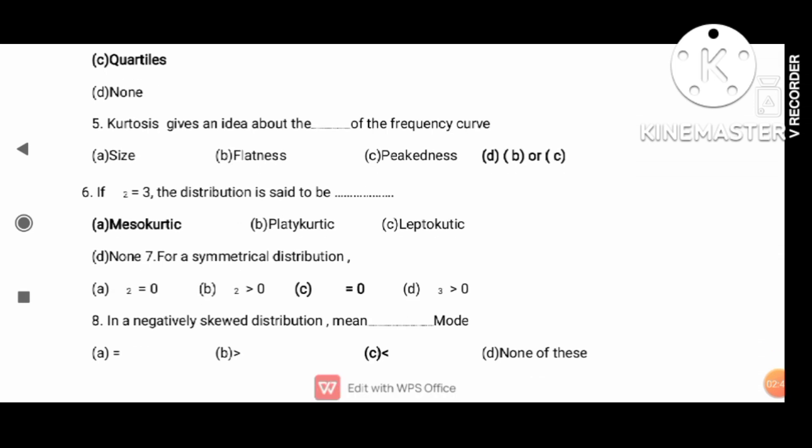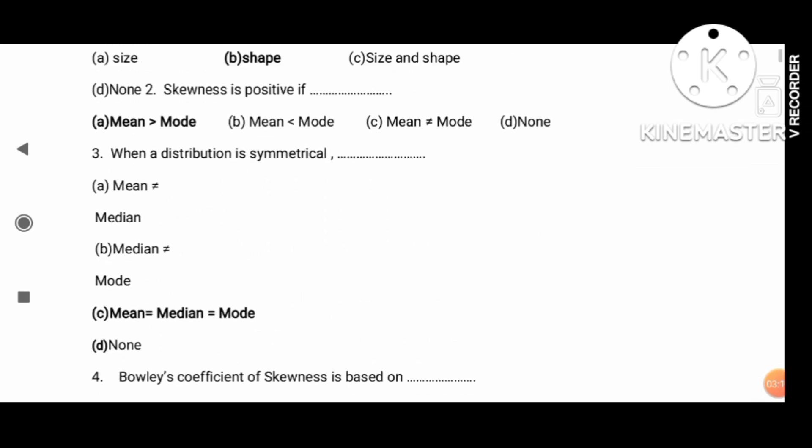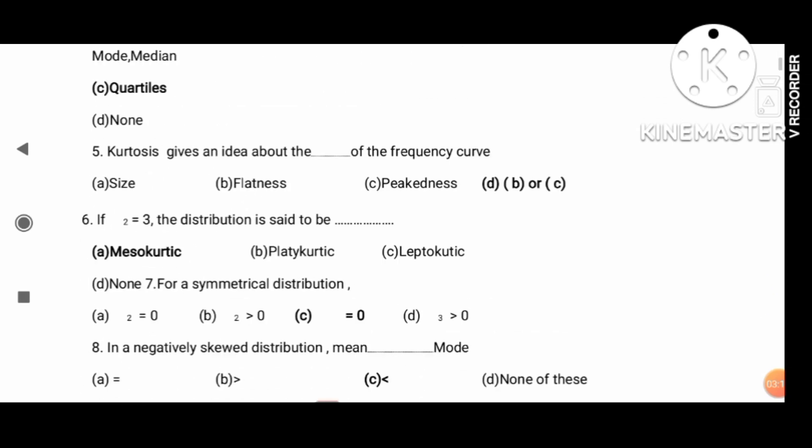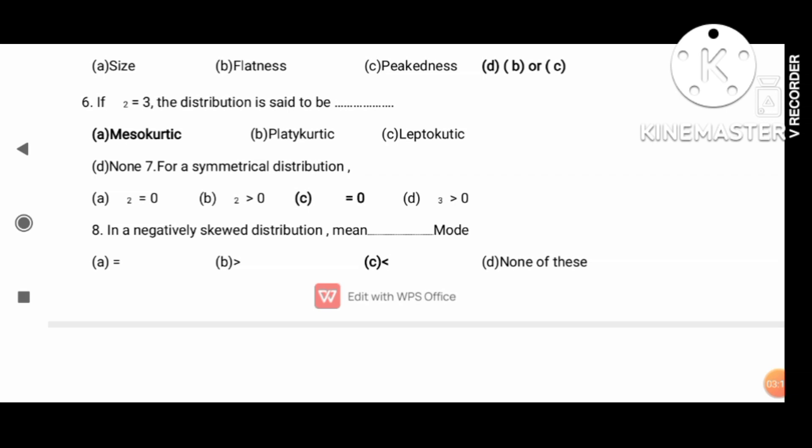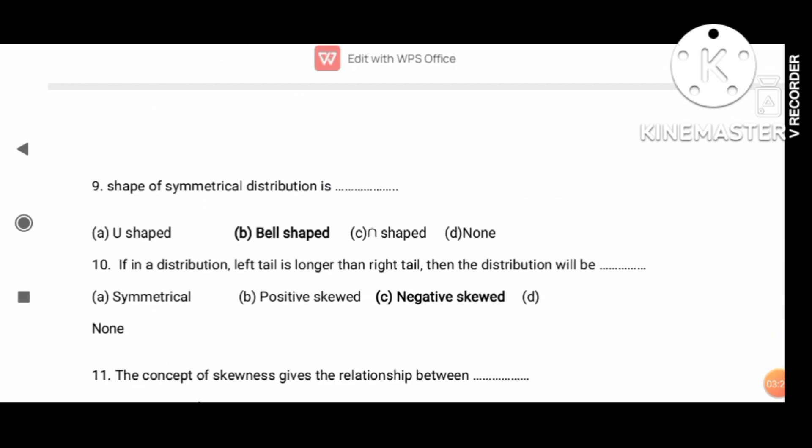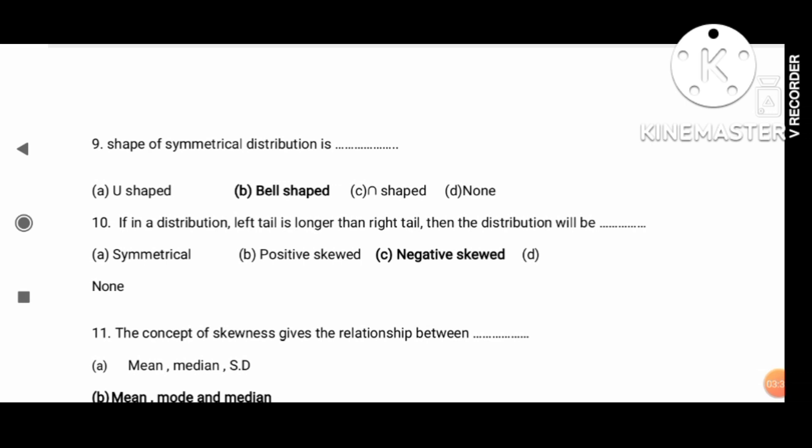The sixth question is very important about the normal distribution curve. Next, for negatively skewed distribution, the left tail is longer than the right. The distribution will be negative skew.